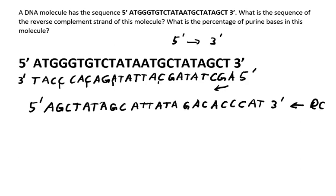Now to the second part we need to figure out what is the percentage of purine bases in this molecule, and we know that purine bases have a double ring system and they are the A's and the G's that we have.